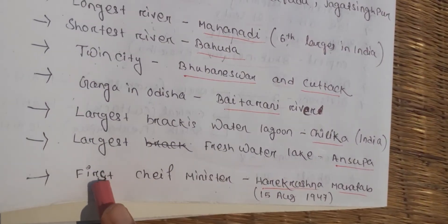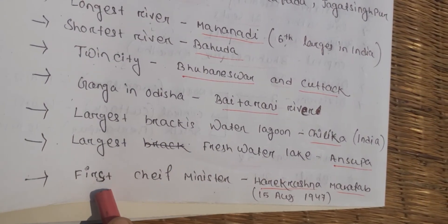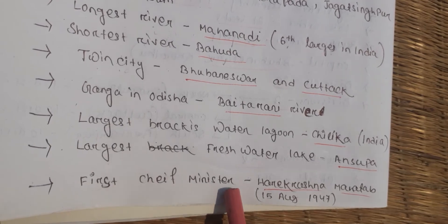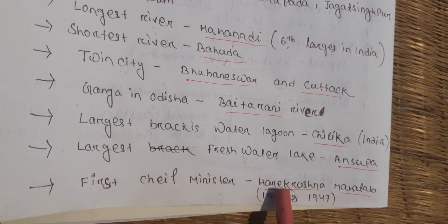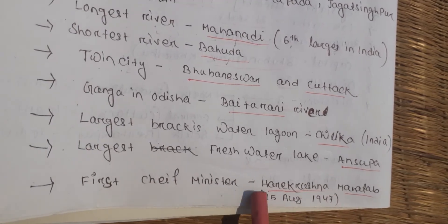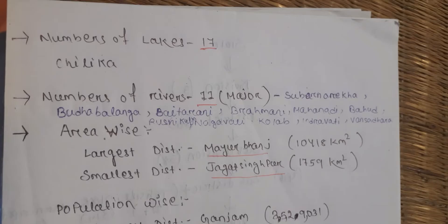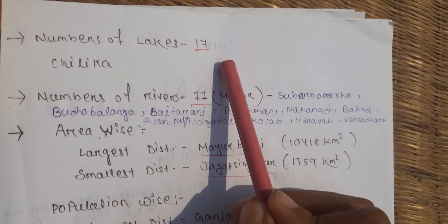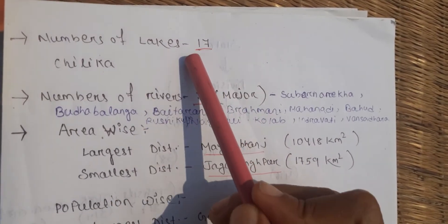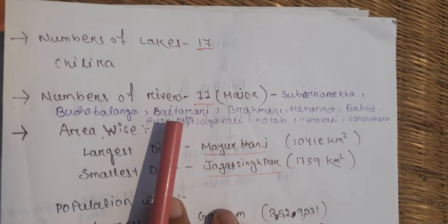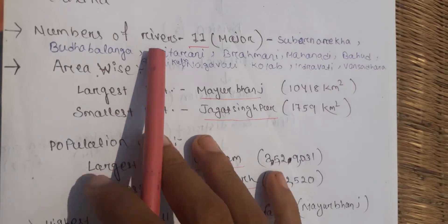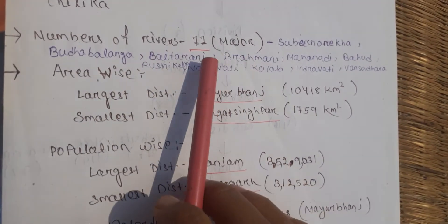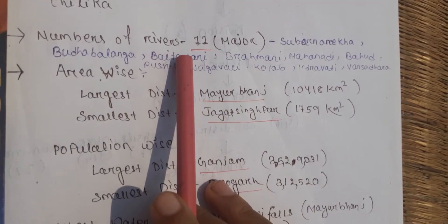The first Chief Minister of Odisha was Harikrushna Mahtab, after 5th August 1947. There are 17 major lakes and 11 major rivers in Odisha.